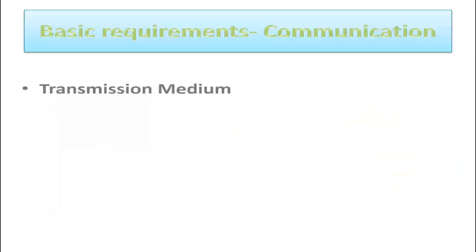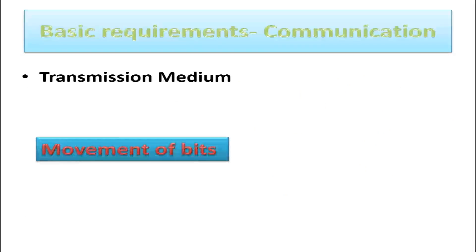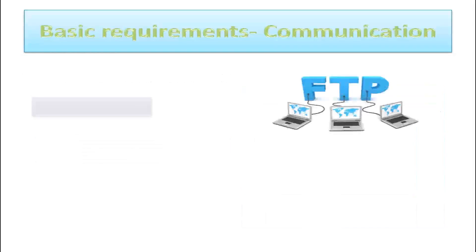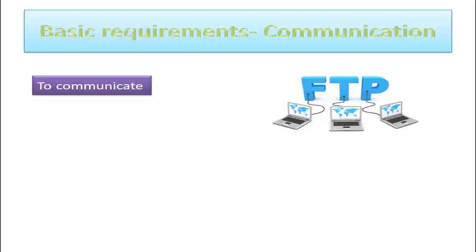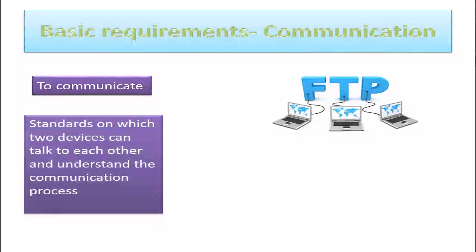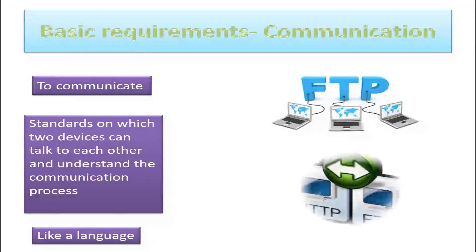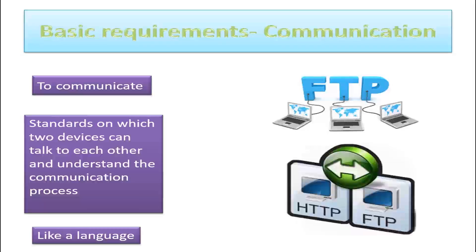Second is the transmission medium for movement of bits over a transmission medium by connecting two devices. Third is protocol. Protocols help to communicate. These are the standards on which two devices can talk to each other and understand the communication process. In simple terms, protocols are like a language. As humans, we need a common platform to communicate; hence, protocols are also required by computers to communicate effectively.